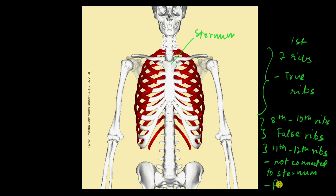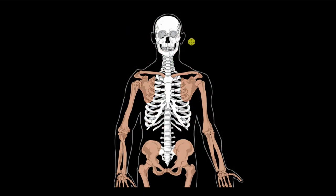To summarize: the axial skeleton is made up of the skull — cranial bones covering the head, facial bones covering the face, ear ossicles in the middle ear, and the hyoid below the jaw. Then there are the vertebrae: cervical in the neck, thoracic in the chest, lumbar in the lower back, the sacrum at the base, and the coccyx tailbone. Finally, there is the sternum, and 12 ribs — seven true ribs, three false ribs, and two floating ribs. Together, the sternum, ribs, and vertebrae form the rib cage, which houses the lungs and heart.